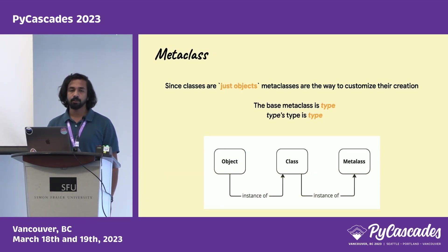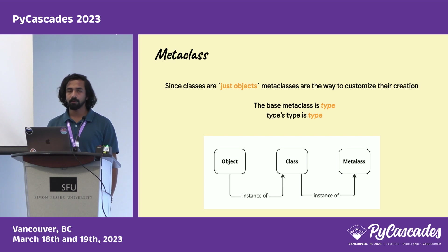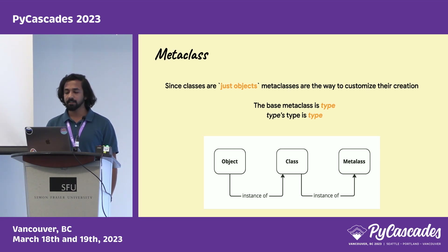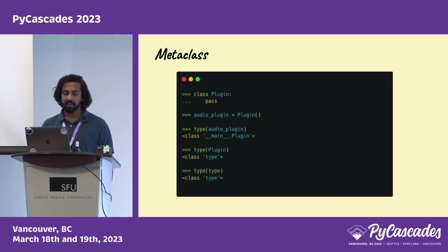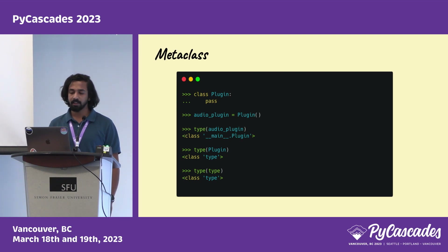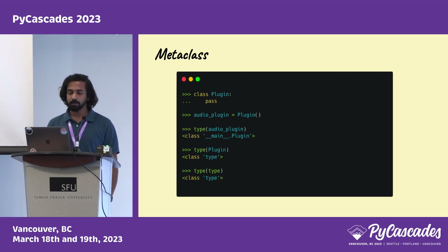Now let's move on to metaclasses. We said that in Python everything is just an object, so our classes are also objects. Metaclasses are a way to create and customize classes. The default metaclass is type, and type's type is also type. We create objects from classes — objects are instances of classes. Similarly, metaclasses are used to create classes — classes are instances of metaclasses. The type of audio_plugin is class plugin, and the type of class plugin is type, meaning the plugin class was created as an instance of the default metaclass in Python.